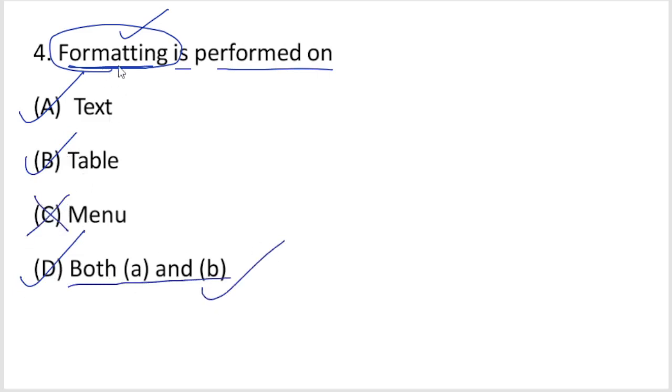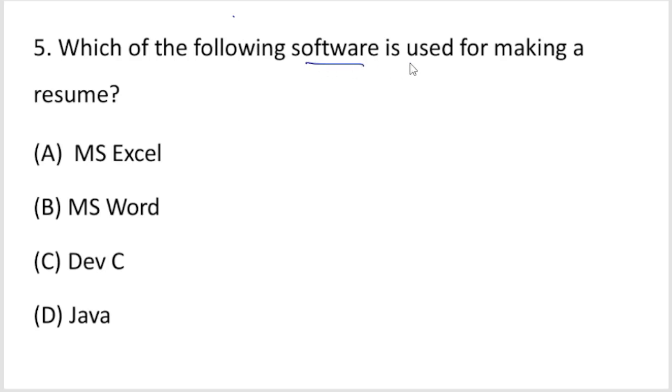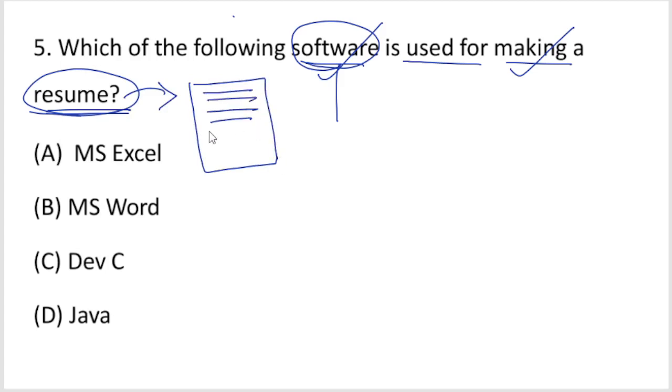Question 5: Which of the following software is used for making a resume? Software is the language of the computer, the programs. A resume is your bio data. Microsoft Excel, Word, or Paint? Microsoft Word is used because resume is text editing. Microsoft Word is text editing software, so we use Word to prepare resumes. Option B is the right answer.